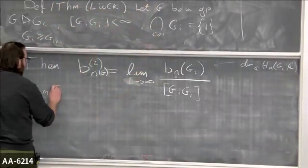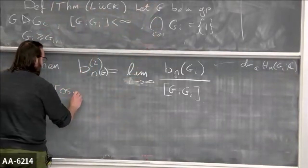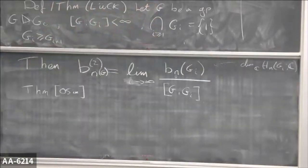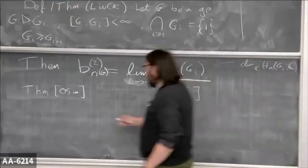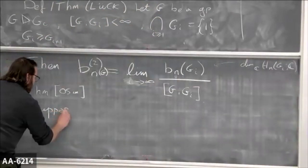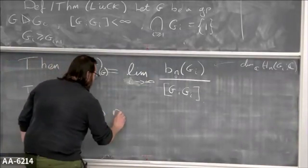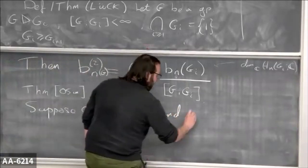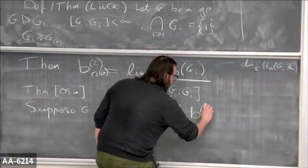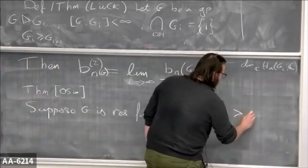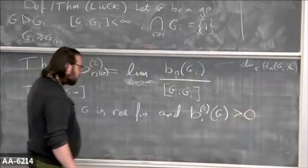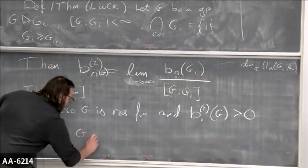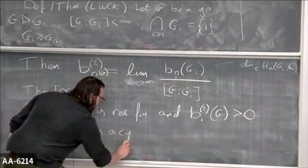The first theorem — which attaches to another mini-course that was here — supposes that G is residually finite and the first L² Betti number of G is larger than zero.